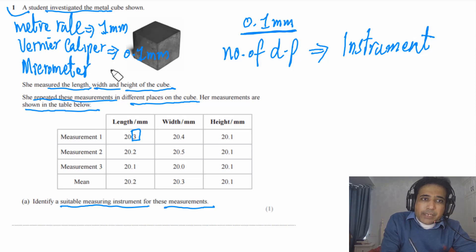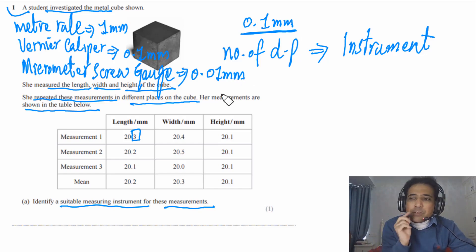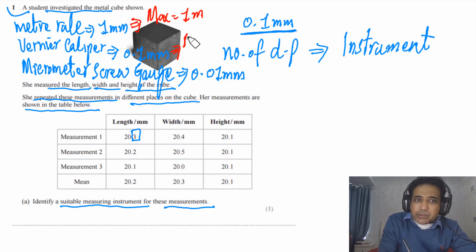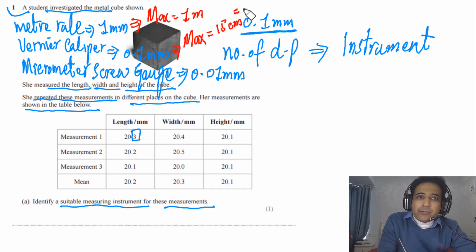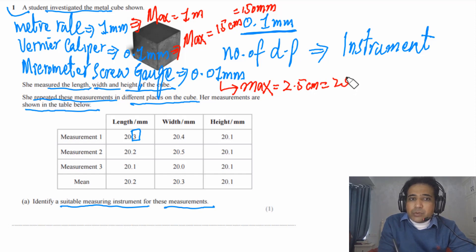The micrometer screw gauge can also measure up to 0.1 mm. However, we also need to consider the maximum reading each instrument can take. With the meter rule, the maximum is up to 1 meter. With the vernier caliper, the maximum is about 15 cm or 150 mm. With the micrometer screw gauge, the maximum is 2.5 cm or 25 mm.